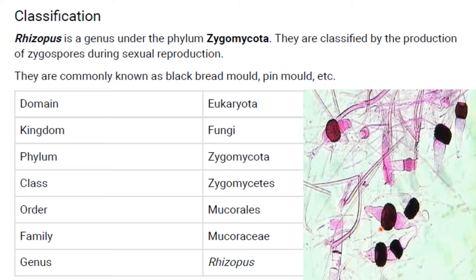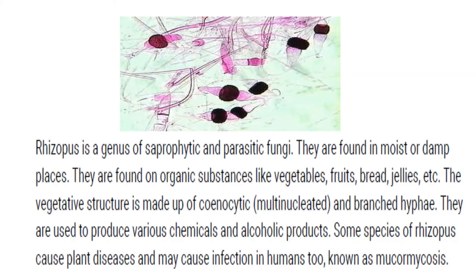They belong to the family Mucoraceae. Rhizopus is a genus of saprophytic fungi, meaning they grow on dead and decaying material — plant or animal. They are also parasitic, meaning they depend on a host for their food. They are found in moist or damp places and in organic substances like vegetables, fruits, bread, and jellies.